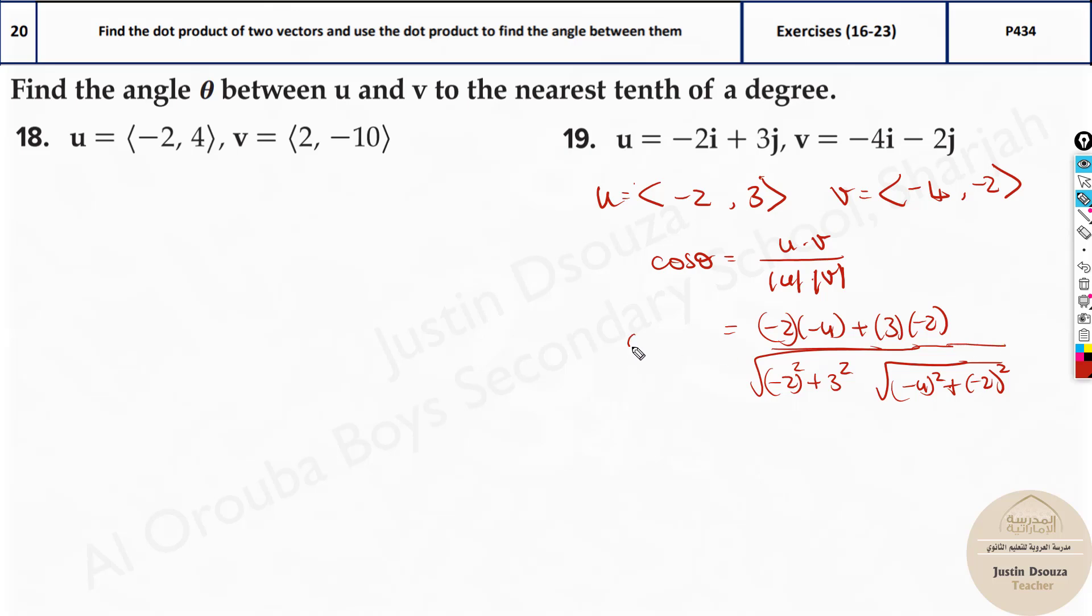Now you can directly put this in the calculator if you want, because you can take cos inverse of this. You will get the answer, but since it's writing, just do one step and then directly do it up.